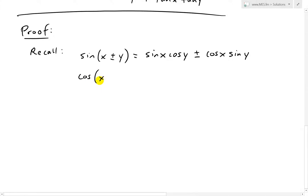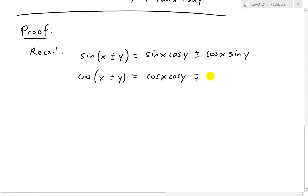Now for the cosine: cos of x plus or minus y equals cos x cos y minus or plus sine x sine y. The difference here is that when it's a plus, we get a minus; when it's a minus, we get a plus.